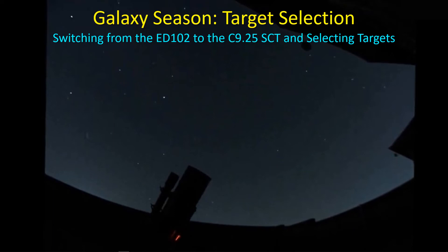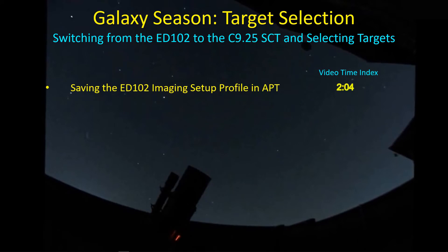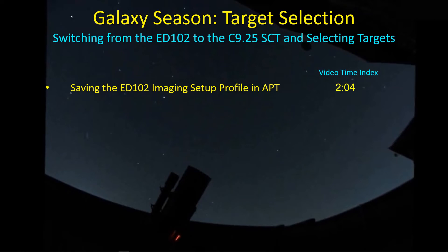So I want to go over some of those things. Now, as we switch from one imaging train system to another in Astrophotography Tool, I want to show what I'm going to do to preserve the imaging setup profile for my ED-102, so that when I go back to it, all the settings are still the same as they were when I left. And by the way, I'm going to have the video time index over here so you can fast forward to those particular topics that you may be more interested in.